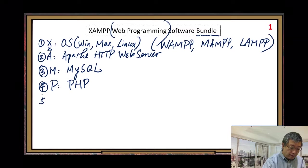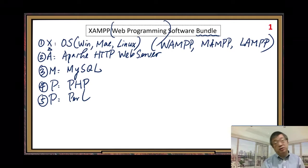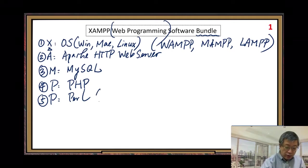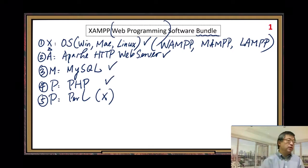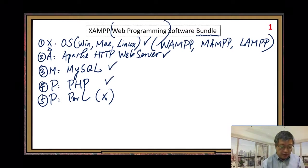The fifth one, the last P, is Perl — and we don't use this. So from this bundle, the first four components we need to use, but the last one we don't need.